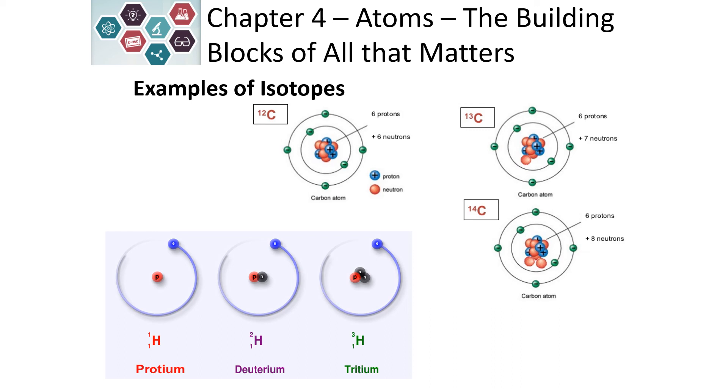Hydrogen has three different isotopes. We've got protium, which is zero neutrons, deuterium, which has one neutron, and tritium, which has two.